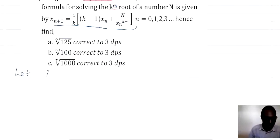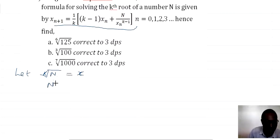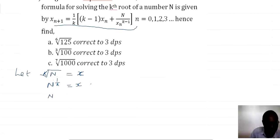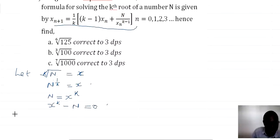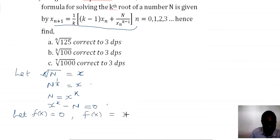Let's get started. Let the kth root of a number n be equal to x, such that n^(1/k) is equal to x. Powering both sides by k, we shall have n is equal to x^k. This is the same as x^k minus n giving us 0. We shall let f(x) equal to 0, such that f(x) is equal to x^k minus N.